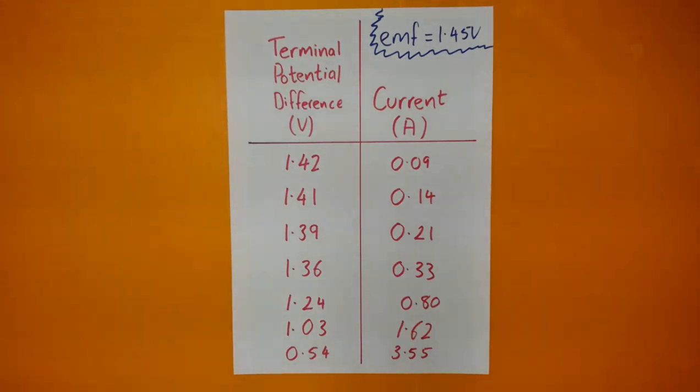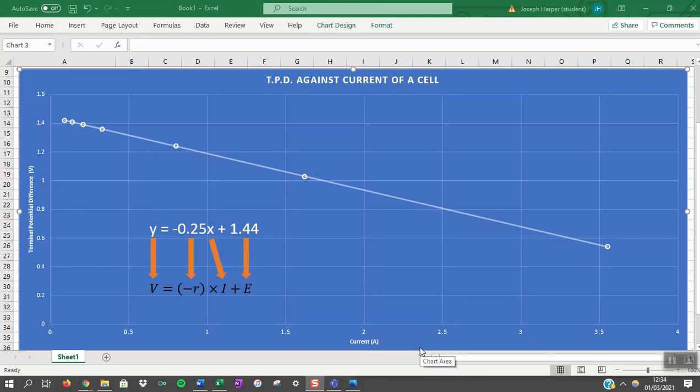If we plot this data as a graph with voltage on the y-axis and current on the x-axis, we have the equation of the trend line to be y equals minus 0.25x plus 1.44. This is consistent with V being the terminal potential difference, R being resistance, I being current, and E being the electromotive force, or EMF.